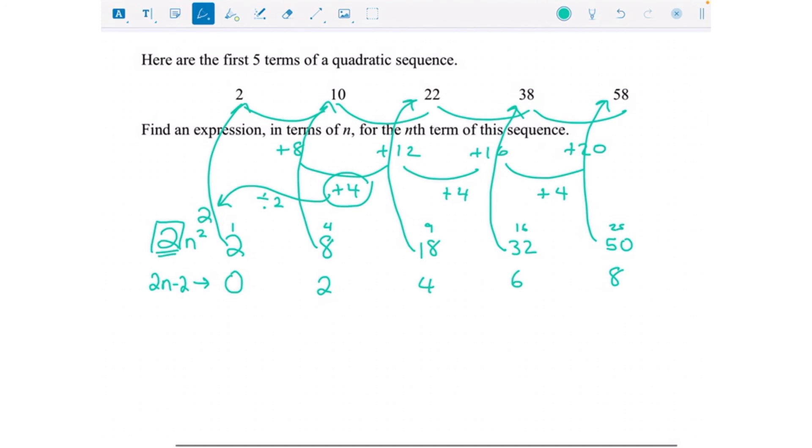So that's 2n minus 2. All together, 2 and the 0 would make 2, 8 and the 2 would make 10, 18 and the 4 would make 22, and so on. So we know that the nth term is 2n squared add 2n minus 2, and that's it all done.